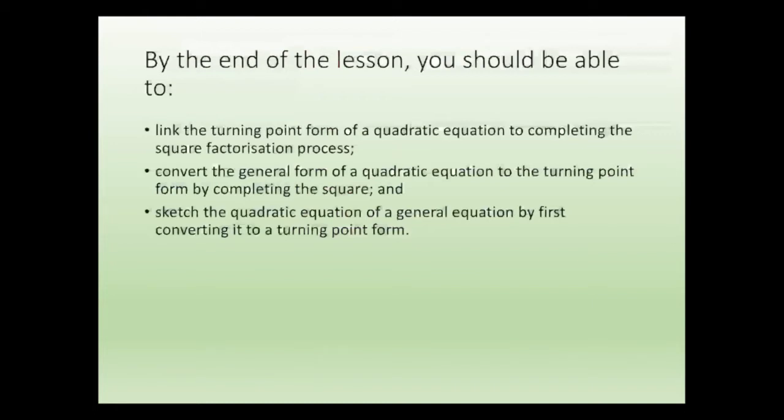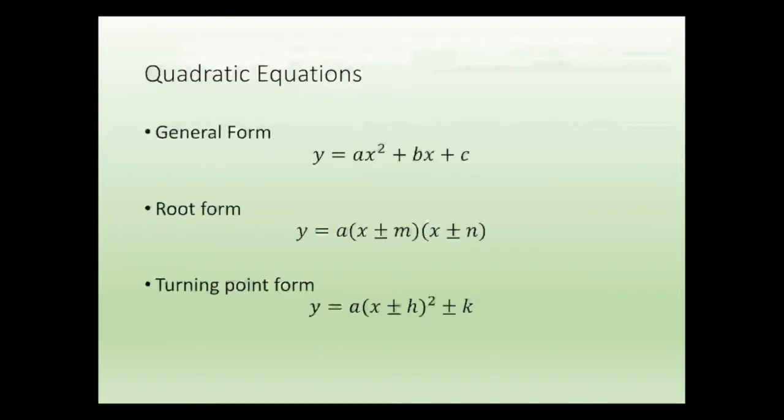So now just a quick revision. We know that the general form is y equals ax squared plus bx plus c. I have shown you how to convert that into a root form. Now, you need to know how to convert it into a turning point form. So, a quick recap of the turning point form.